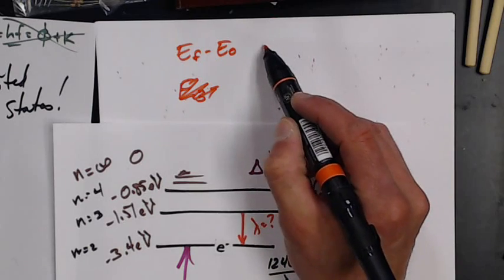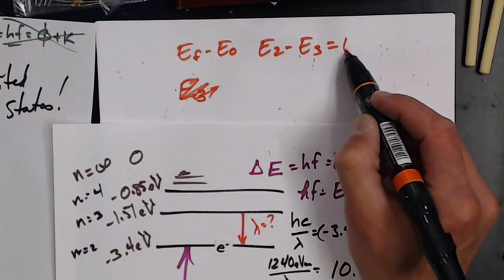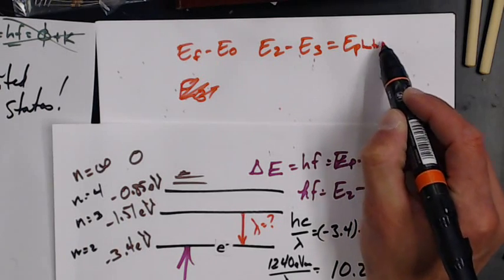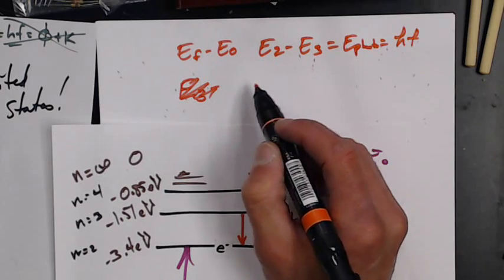So my final is 2, my initial is 3, and I want to find out what energy that is. It's the energy of the photon, which is hf, but I want the wavelength because I'm an old laser guy.